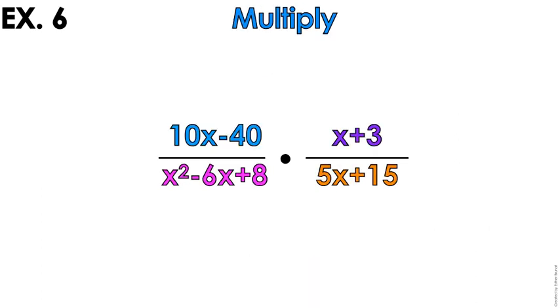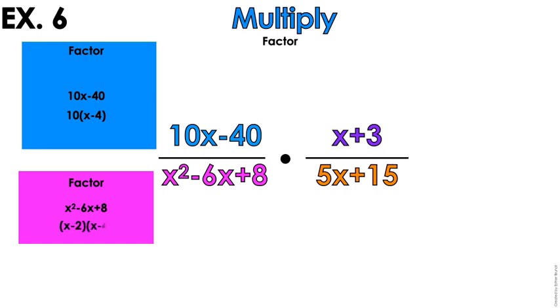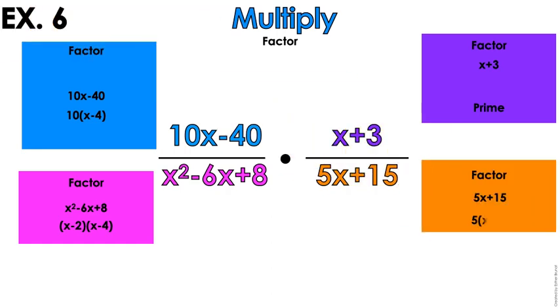Last but not least, number 6. We are going to factor. Factor the blue part. So pause the video, practice your factoring. The blue part has a GCF. The pink part is a trinomial where a equals 1. Purple part is prime. The orange part has a GCF.